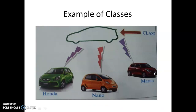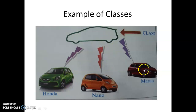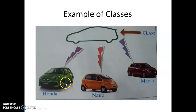Then, an example of a class is suppose a Car class. A car class — Honda is also a car, Nano is also a car, and Maruti is also a car. So all cars, different types of cars, have different unique characteristics and behaviour, and they belong to a common class which is called Car class.